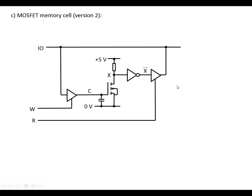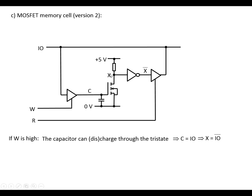So let's look at another variation of this. Notice that we've moved the inverter from here to here. So if W is high, the capacitor can charge or discharge through the tri-state, which means that C is going to be the same as what we've got on the data line, and X is going to be the opposite. So if we've got a 1 here, C is going to be a 1, which means this MOSFET conducts, which means X is going to be 0. If this is a 0, this would be a 0 — MOSFET doesn't conduct — so this is going to be a 1. If W is low, then the capacitor is going to keep its charge, so X is going to stay the same. So the data is now stored.